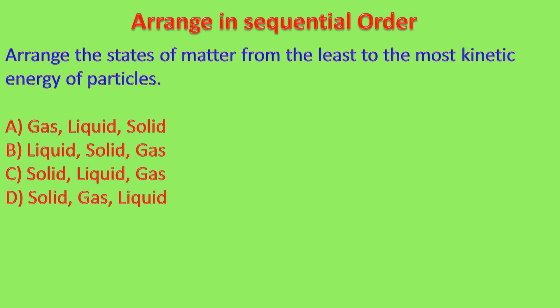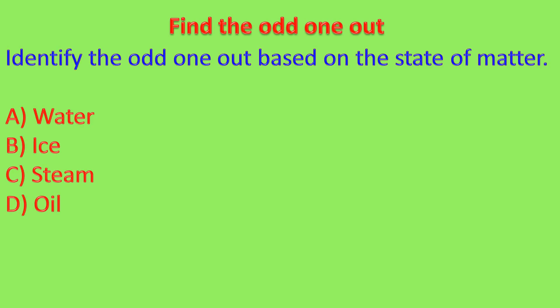Observe the options and identify the odd one. Options: water, ice, steam, oil. Ice is the odd one out because ice is a solid, while the others are liquids or gases. Next, identify the odd one out based on physical state — which is a solid at room temperature — so that one is the odd one among the four.